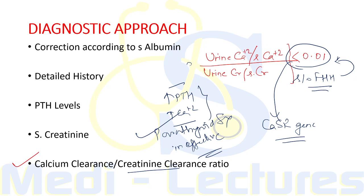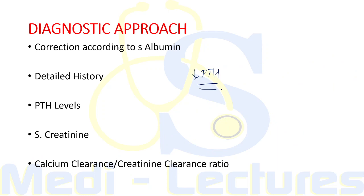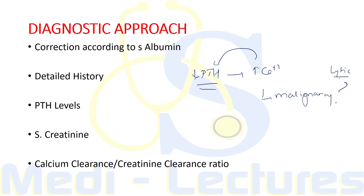When investigations show low PTH due to negative feedback from hypercalcemia, this indicates non-parathyroid mediated hypercalcemia. The most common cause is malignancy, which can cause lytic hypercalcemia or PTHrP-mediated hypercalcemia. It can also be due to granulomatous diseases, which increase formation of active vitamin D leading to hypercalcemia, which in turn suppresses PTH.